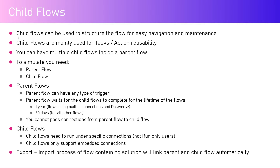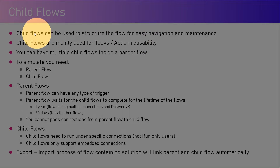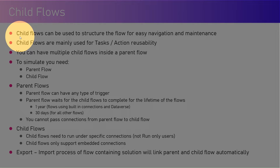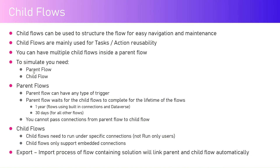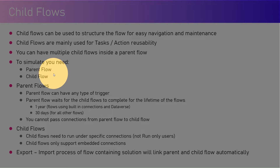Child flows are mainly used for task or action reusability. If within your flows there are some sections which you can reuse with other flows, it is a wise idea to create separate independent flows out of them. You can have multiple child flows inside a parent flow. To simulate this, you need one parent flow and one child flow — the parent flow calls the child flow, and the child flow runs independently as well.